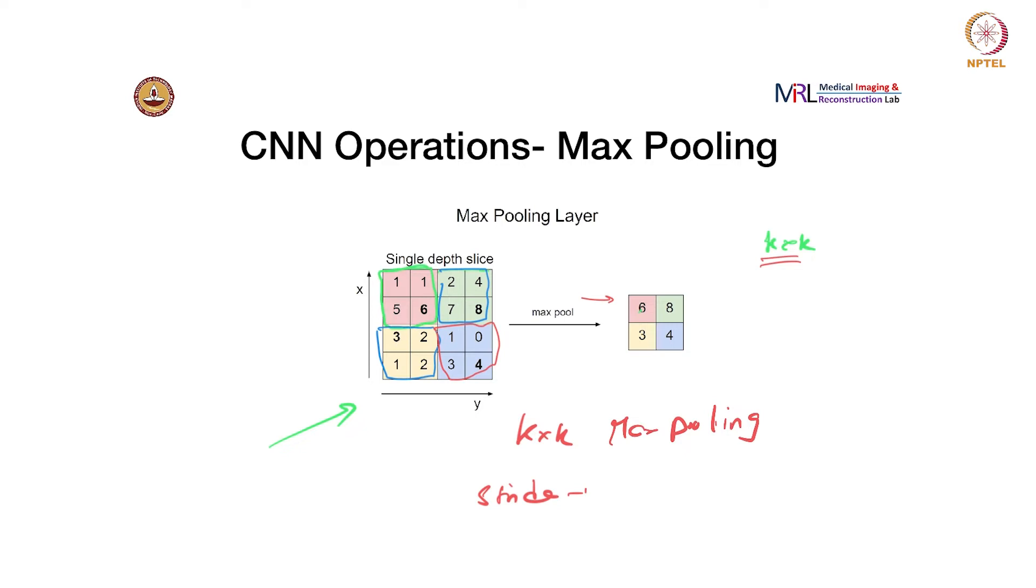Basically, what this does is make the network slightly translation invariant. We will see how that works. First, if you do with a stride, it definitely helps in reducing the size of network, so you can treat it like a filter. The other one is that it makes, to some extent, the network translation invariant, at least to smaller translations.